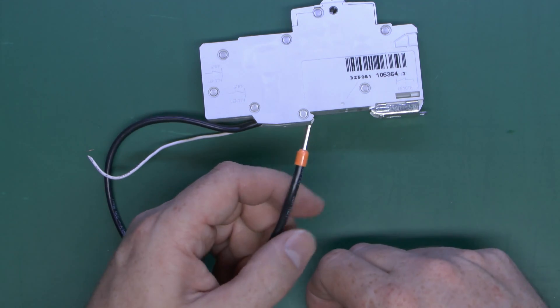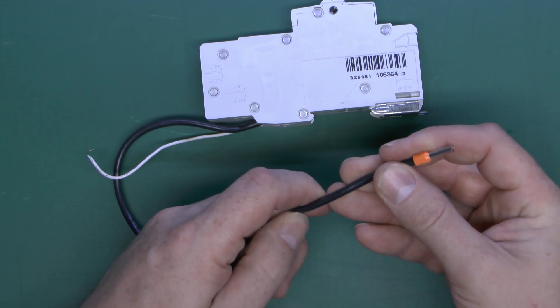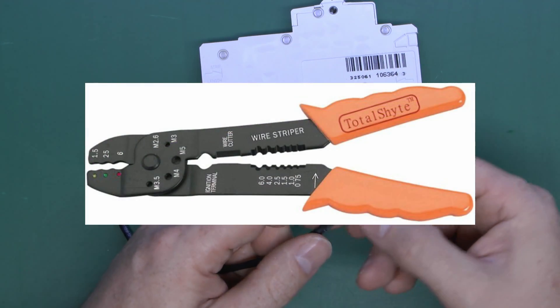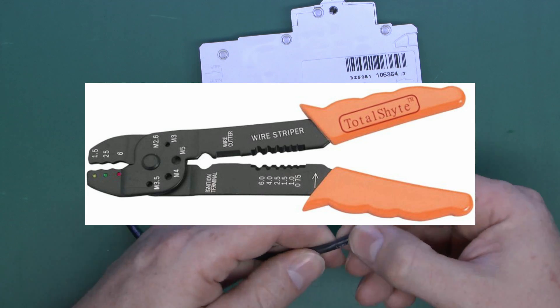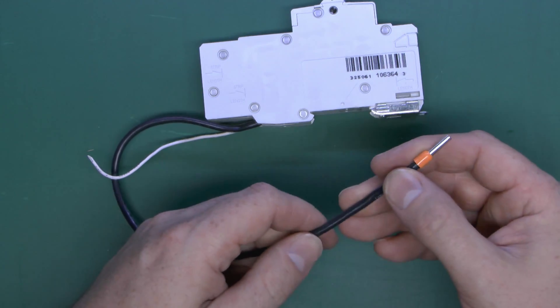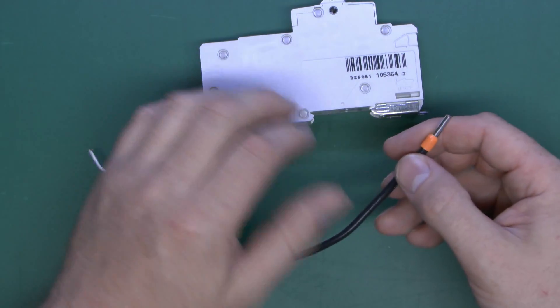Now there are several types of crimping tool available. The cheapo-matic variety, which I don't have here but here's a picture of one, pretty much those are hopeless. And the problem with those is there's no way of controlling the amount of force that's applied. They're literally press and hope. So maybe you applied enough force or maybe you didn't.